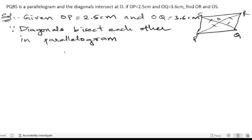We write OP equals OR. Since OP is given as 2.5, OR will also be 2.5 centimeters. Next, OQ equals OS, which equals 3.6 centimeters. They asked us to find OR and OS. We got OR equals 2.5 centimeters and OS equals 3.6 centimeters. This is the answer.